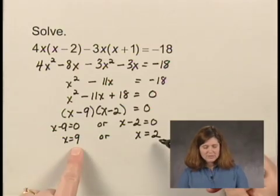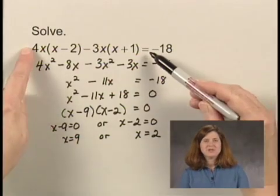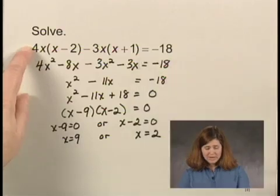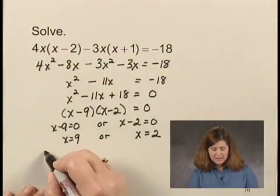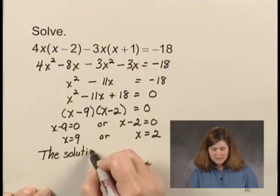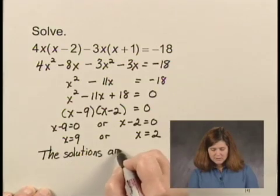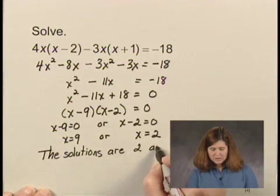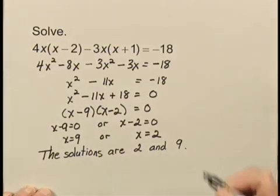If we take these numbers and carefully check them back in the original equation, we find that both numbers check. So we can state that the solutions are 2 and 9.